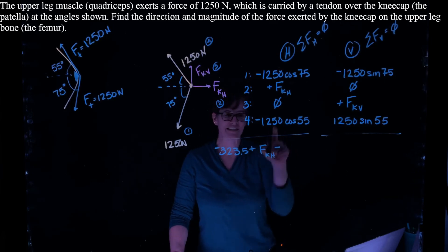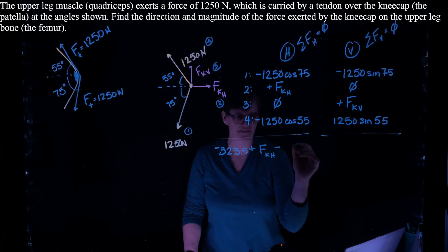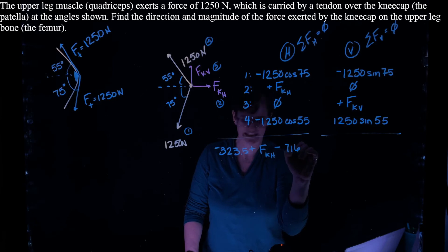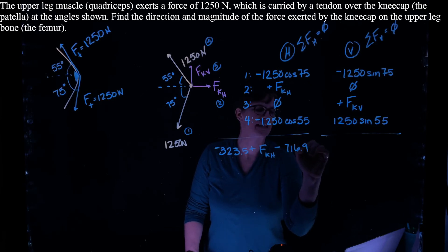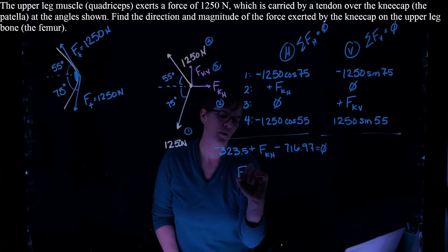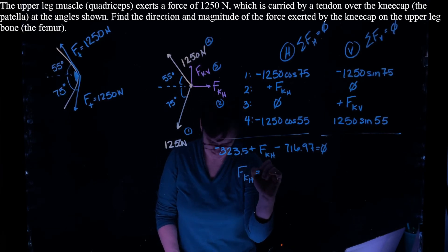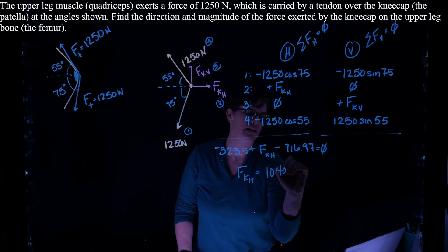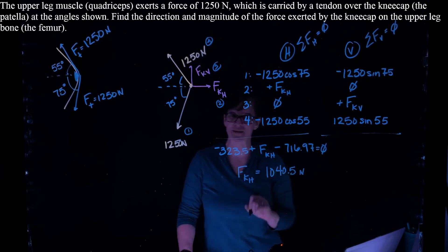Minus 1250 times the cosine of 55 is 716.97. That is going to equal 0. So I find that my horizontal component of the knee is equal to 1040.5 newtons. Right?